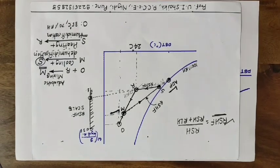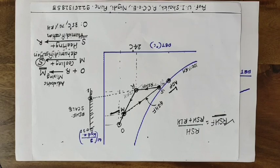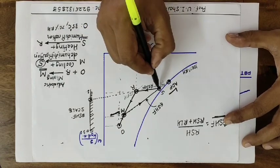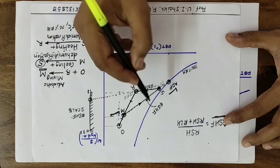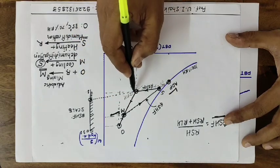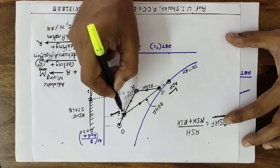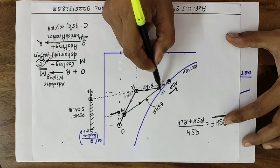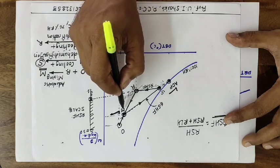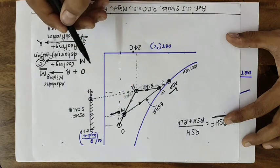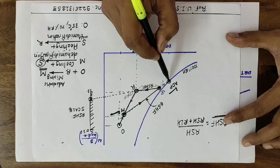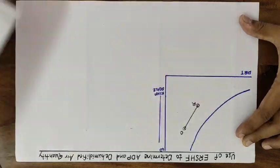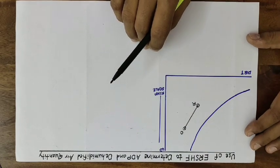Hello friends, welcome to the fourth video on refrigeration and air conditioning. In the previous video we learned that the supply air condition lies on the intersection of the GSHF line and RSHF line. The GSHF line runs from the mixed air condition M up to the coil ADP. To fix the supply air condition, knowledge of coil ADP as well as mixed air condition is required. In today's session we will learn how to fix the coil ADP and mixed air condition with the help of the ERSHF line.